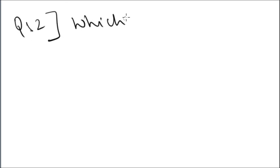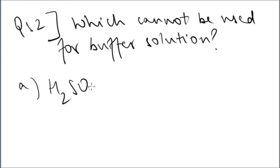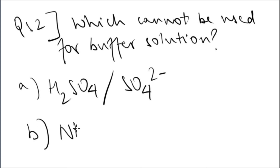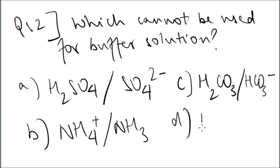The second question is: which of the following cannot be used for a buffer solution? Option A is sulfuric acid and its conjugate, option B is ammonia and its conjugate, option C is carbonic acid and its conjugate, or option D is phosphoric acid and its conjugate.